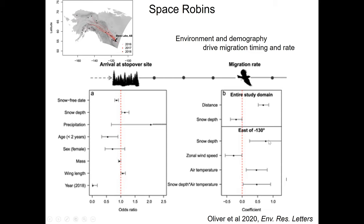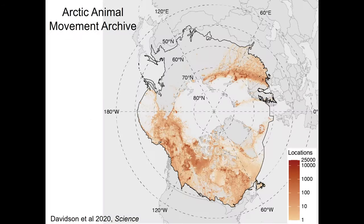Using MoveBank and EnvDATA to gain easy access to environmental datasets, the study examined which environmental variables best predict the day the robins arrive in Slave Lake. Young robins arrived earlier; deep snow makes them arrive later; precipitation makes them arrive much later. When looking at migration rate — how fast they fly from Slave Lake to the summer ground — the distance to the summer ground is the main driver: the farther they are, the slower they fly. Deep snow slows them down in some regions; warm air lets them migrate faster. Understanding these relationships helps predict how they will behave in a decade or two.